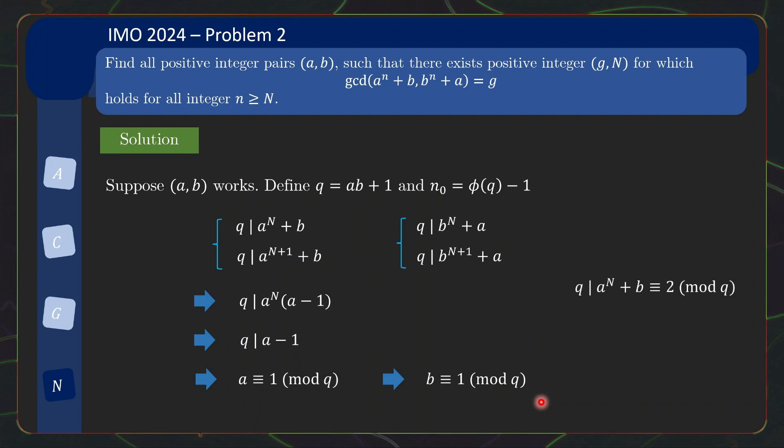And now, we see that q, recall we have the divisibility, but a and b are congruent to 1, so this thing is congruent to 2 mod q. So how can q divide something that's congruent to 2 mod itself? Well, this can happen if q = 1 or q = 2, but taking a look at this, the only possible solution then is q = 2 as well as a = b = 1.